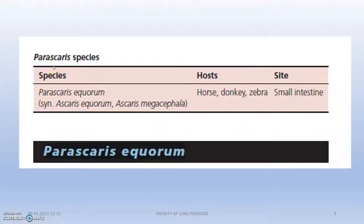Parascaris species actually belong to the order Ascarida, class Arandia. If you are not familiar with the order, family, or species, you can see my video on the taxonomy of Ascarida — I will give the link in the description box. The species is Parascaris equorum and the synonyms are Ascaris equorum and Ascaris megacephala, meaning the cephalic region is very big.